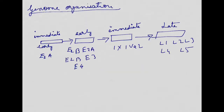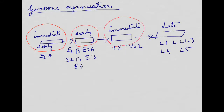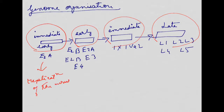Now let's look at the genome organization of adenovirus. There are four categories of genes: immediate early genes, early genes, intermediate genes, and late genes. These are responsible for various functions. For example, some genes are involved in replication of the virus, providing the machinery for viral replication, and ensuring transcription of late genes.